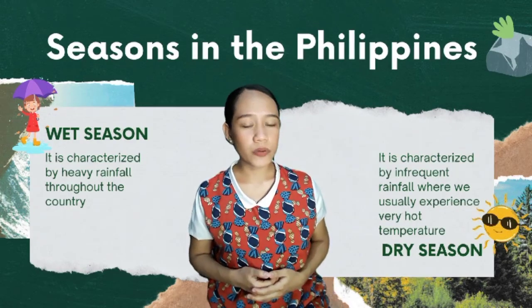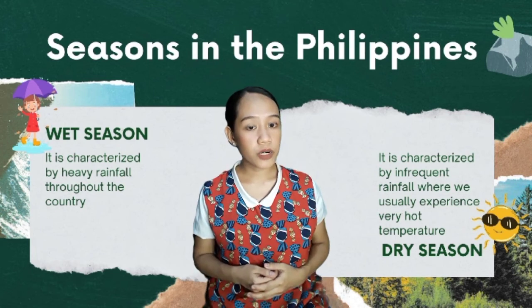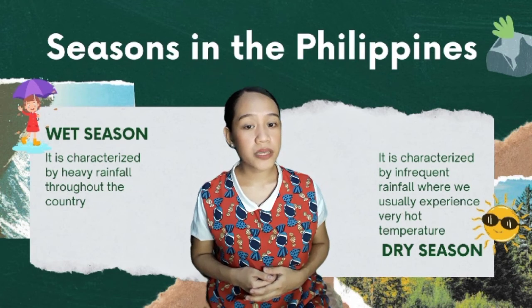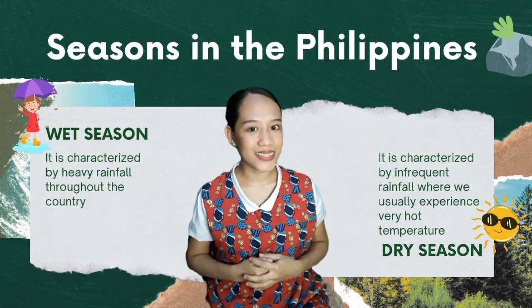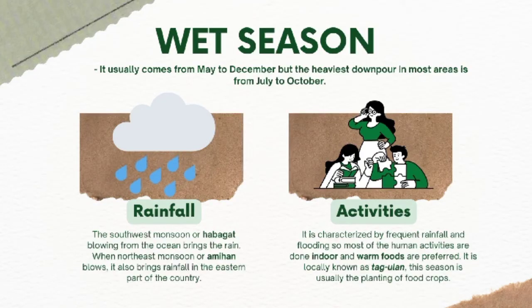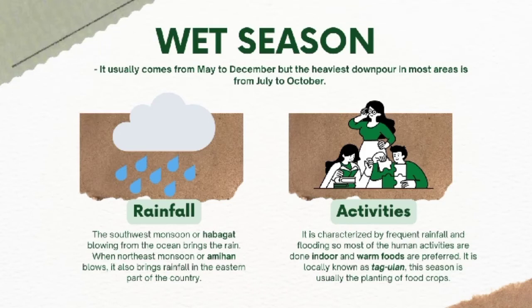Wet or rainy season is characterized by heavy rainfall throughout the country. It usually comes from May to December, with the heaviest downpour in most areas from July to October. The southwest monsoon or habagat blowing from the ocean brings the rain. The northeast monsoon or amihan also brings rainfall to the eastern part of the country. It is characterized by frequent rainfall and flooding, so most human activities are done indoors and warm foods are preferred. It is locally known as tag-ulan, and this season is usually the planting season for food crops.